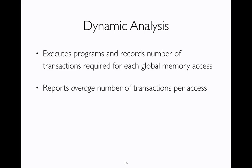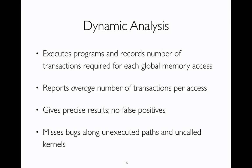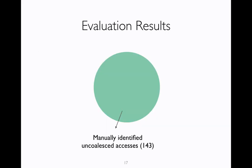Some interesting properties of the dynamic analysis are that first, it gives precise results because it is based on an actual execution. So if we see an uncoalesced access, we know that it is actually an uncoalesced access. Second, it identifies bugs only along the executed path and misses any bugs that lie along the unexecuted branches or uncalled kernels. So now let's look at the results of the comparison. We identify 143 actual bugs in the suite. We collected all the accesses that were reported by the dynamic analysis and the static analysis, and then we manually went through them and validated the potential bugs.